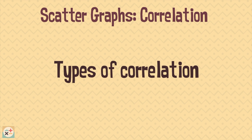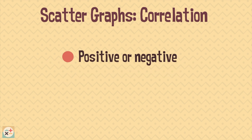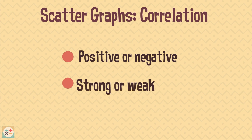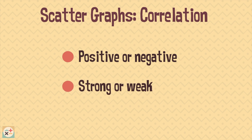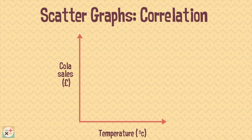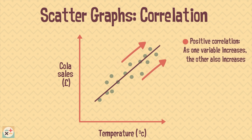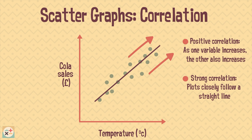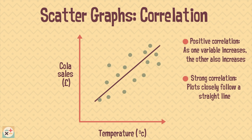There are different types of correlation: positive or negative, and strong or weak. This scatter graph shows that there is a positive correlation, because cola sales increase as the temperature increases — both variables increase. We can also say that this is a strong correlation as the plots closely follow the line of best fit. If the plots looked more spread out, we would say there is a weak correlation.